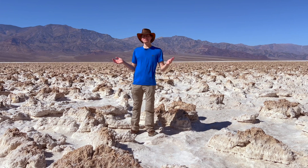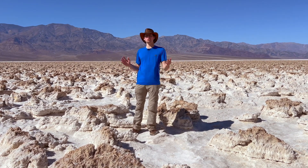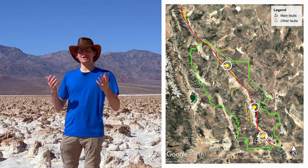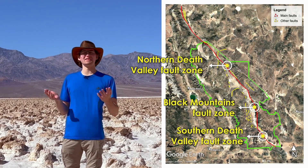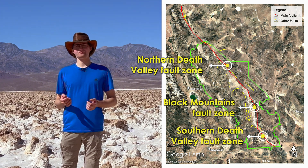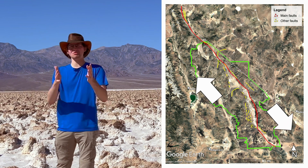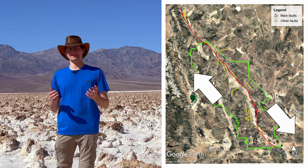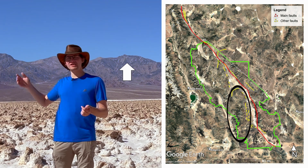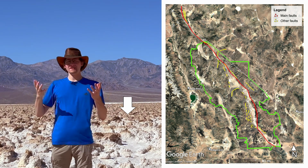Death Valley is an enormous valley more than 120 miles long north to south and as much as 20 miles wide in places. This enormous valley was formed by major tectonic faults that line both sides of the valley and run for hundreds of miles north to south. This part of the North American continental crust is stretching apart — it is being extended — and that allows for large mountain ranges like the Panamint Range behind me to rise up and valleys to form between them and drop down.